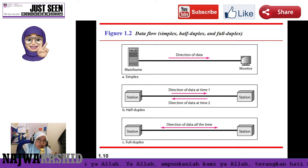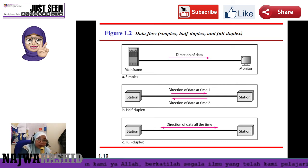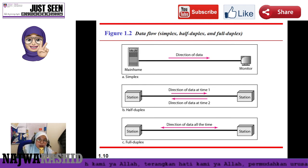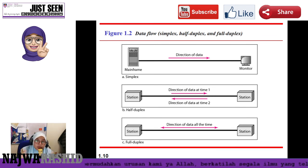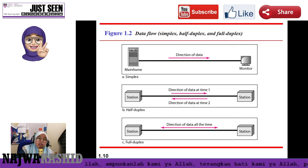In data communication, there are three types of data flow. The first is simplex, which means one direction only. For example, a keyboard — you type something and the keyboard sends data to the processor or CPU, but the CPU cannot send data back to the keyboard. The second type is half duplex, where both devices are allowed to send data, but not at the same time. An example is a walkie-talkie — when you talk, your receiver must listen, and only after you finish can your receiver reply.